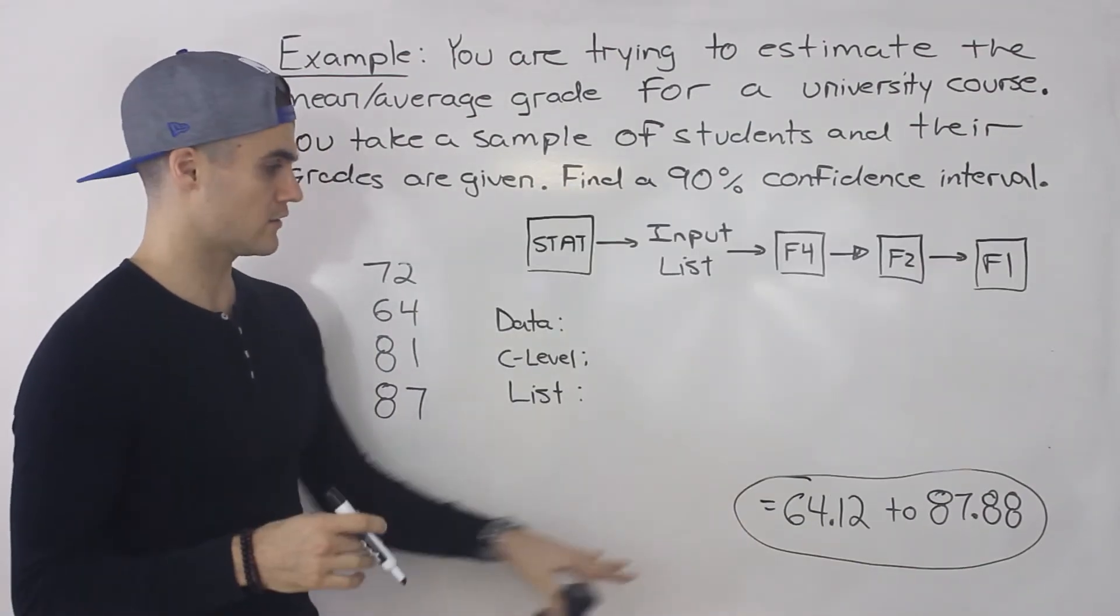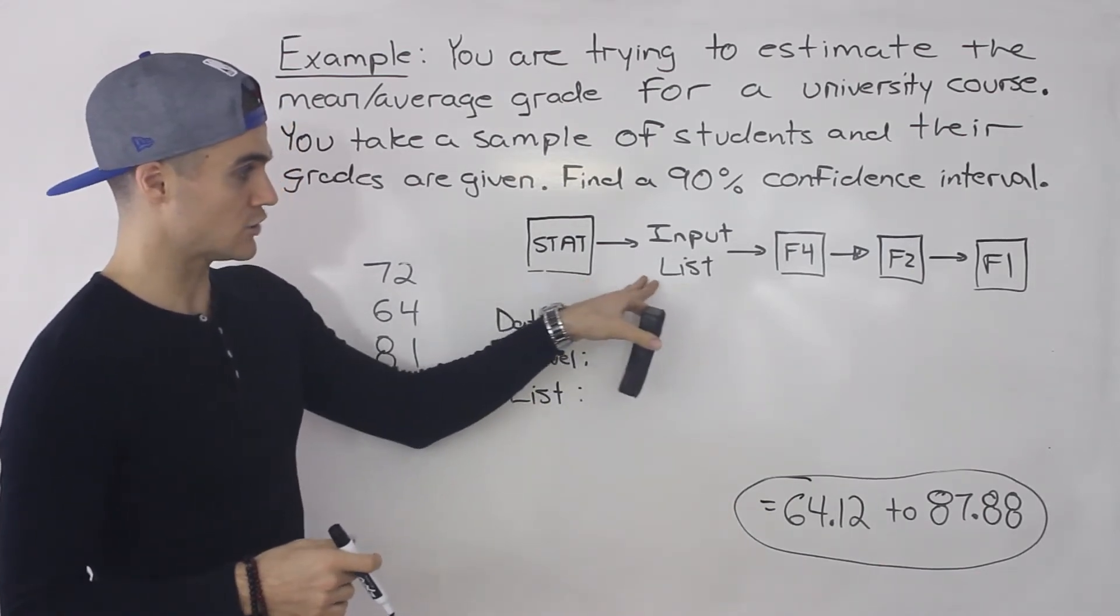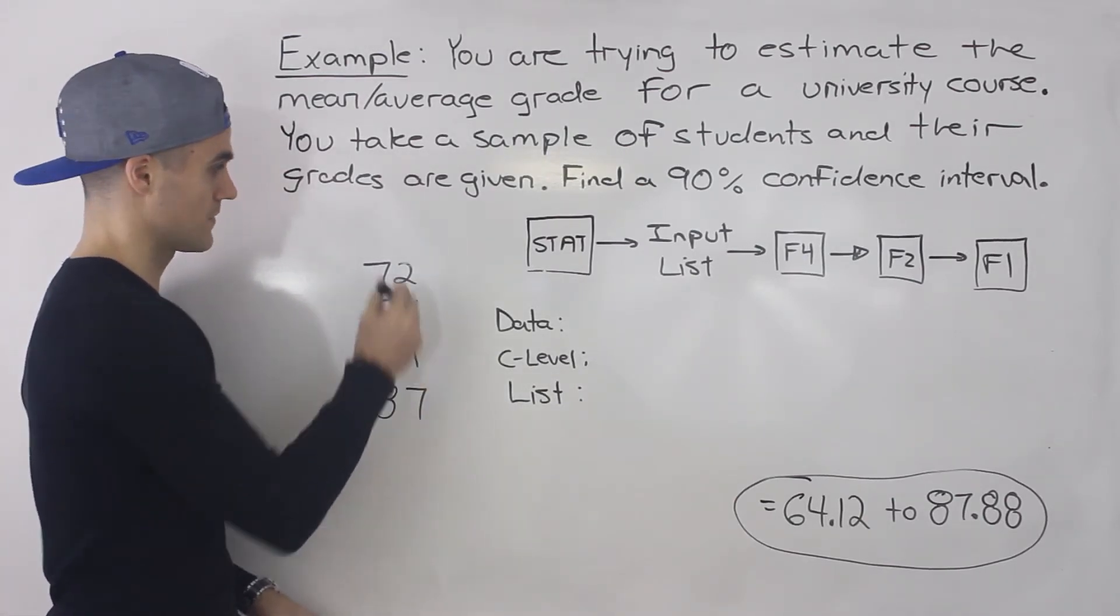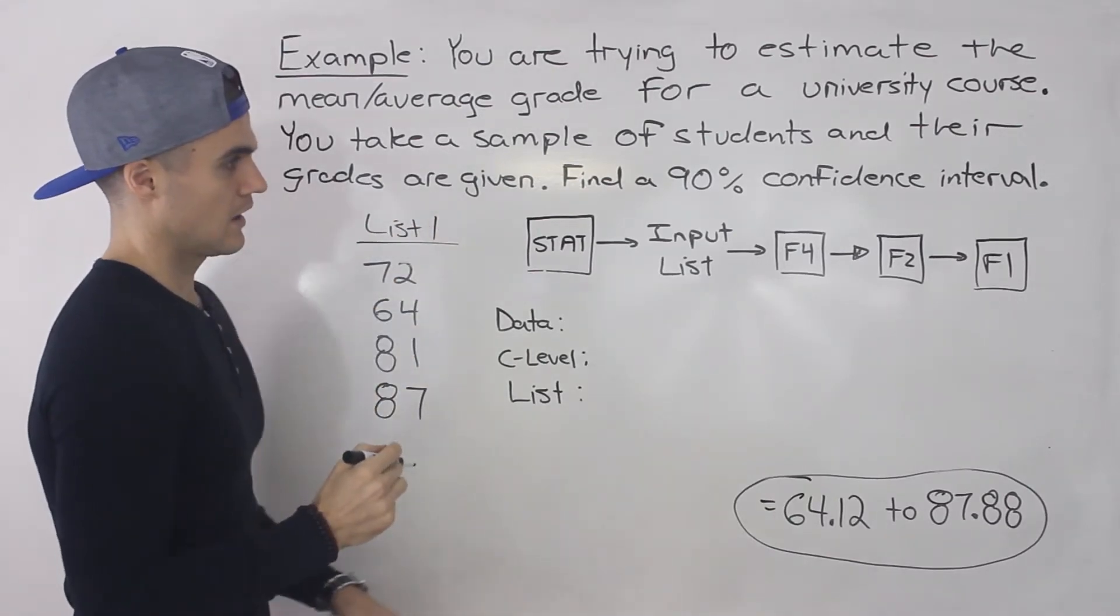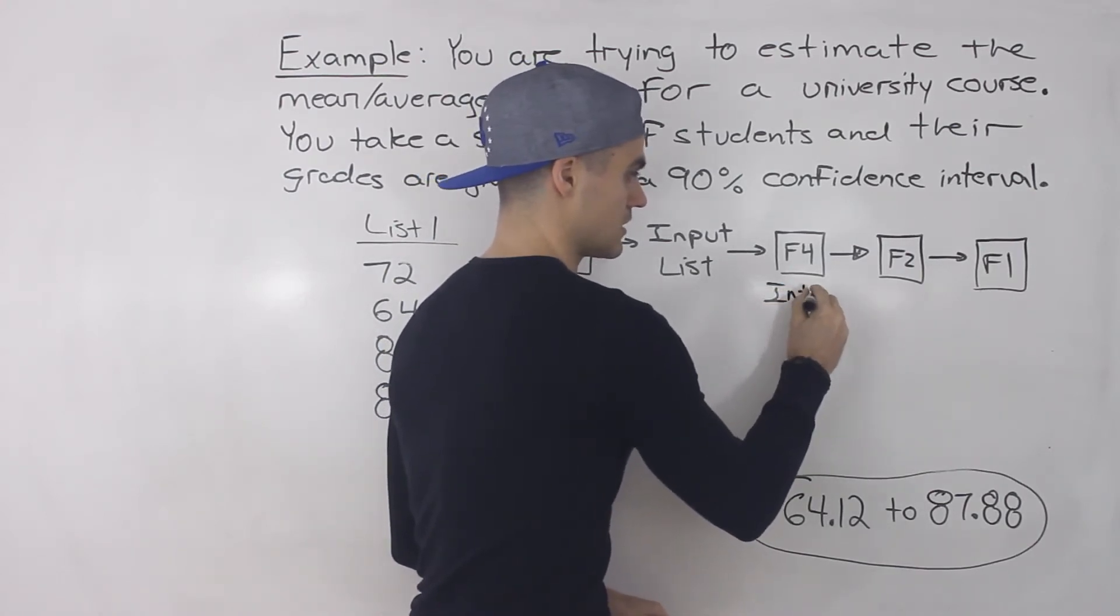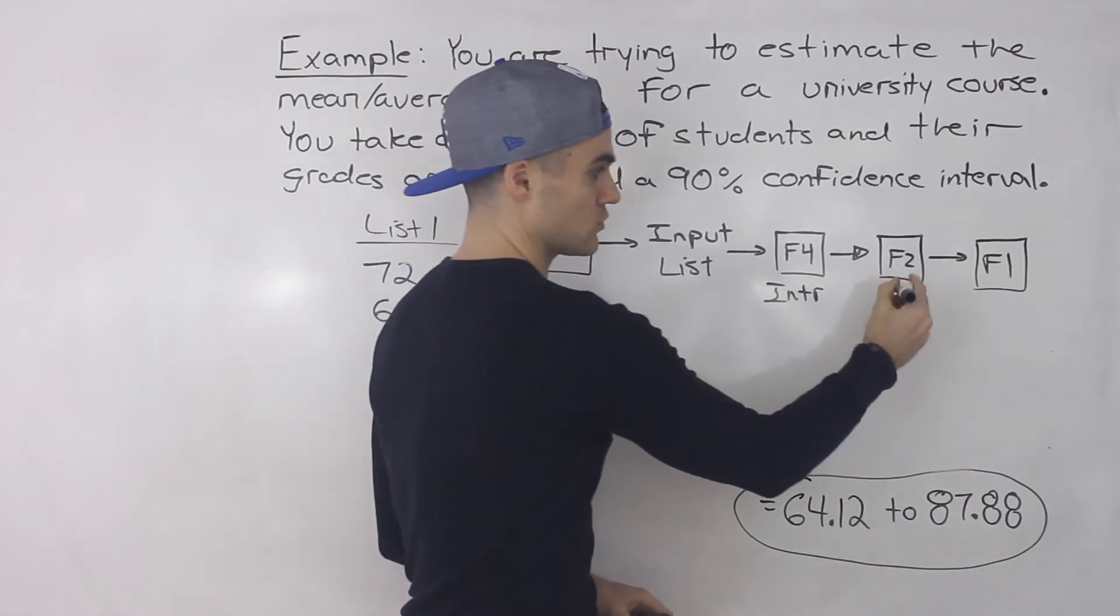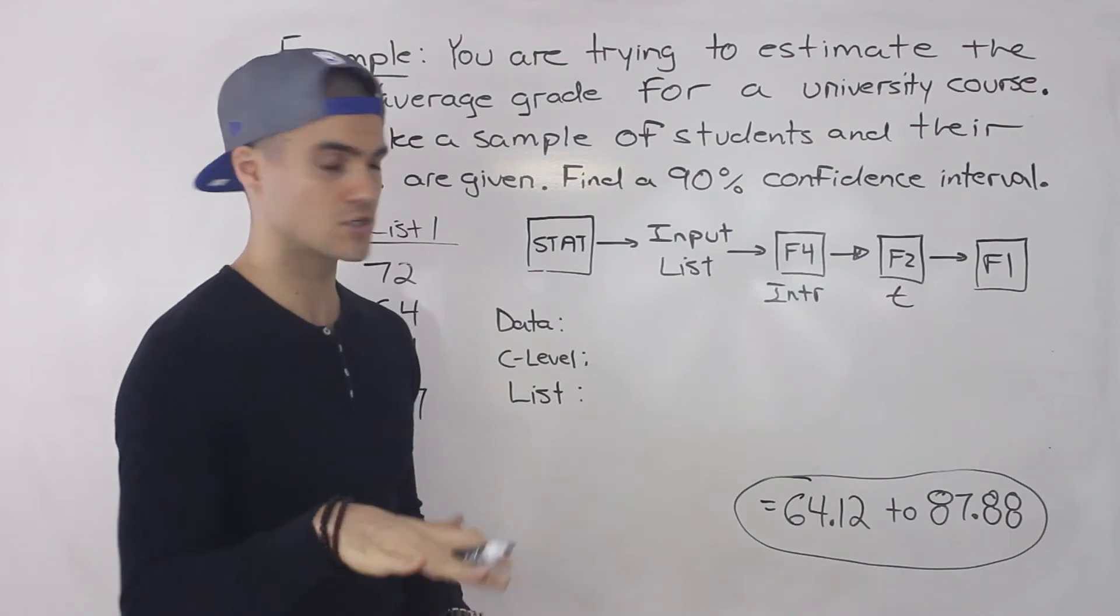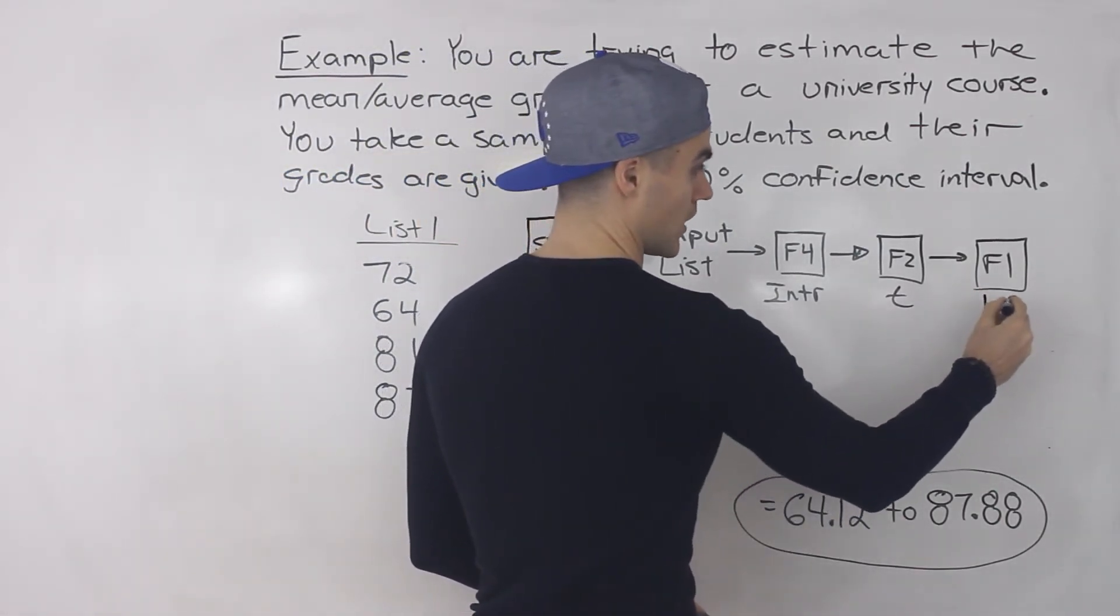And if you're to do this on your calculator to find this confidence interval, go to the main menu, you go to stat, then you're going to input the list. The list is going to be this over here. So you're going to input four items into, let's say, list one. And then you're going to go to F4, which is intr. It's basically short form for interval. F2, we're using the t distribution because the population standard deviation is unknown. And then this is one sample.